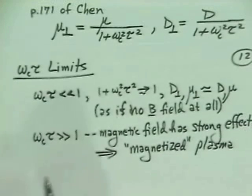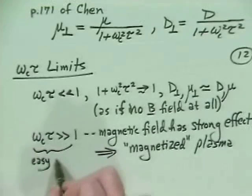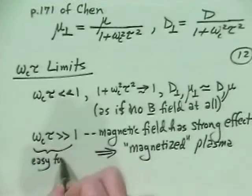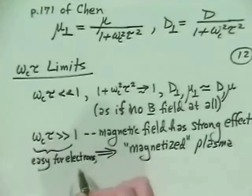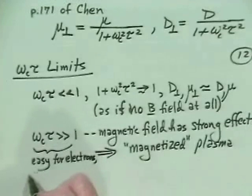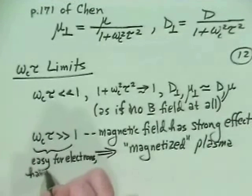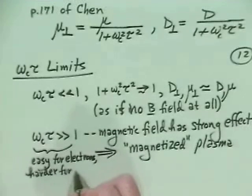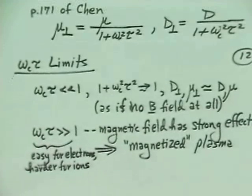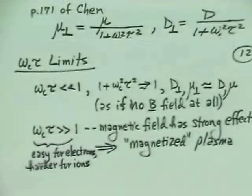This is what we refer to as a magnetized plasma. You could apply any magnetic field and still have omega_c * tau small with little effect, so the significant effect of the magnetic field comes when it's strong enough to have omega_c * tau greater than one. This condition is easy to satisfy for electrons but harder for ions due to mass ratios, yet we still quite often have so-called magnetized plasmas.